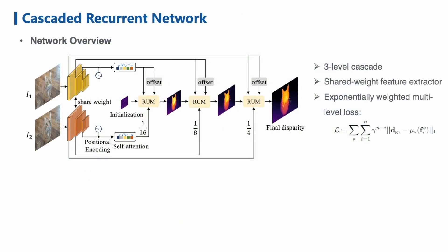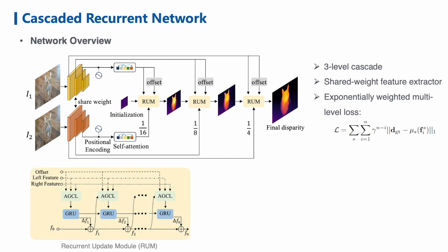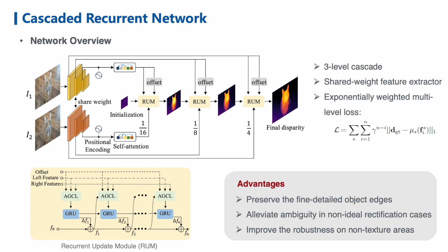This is an overview of our proposed network. A pair of images are fed into two shared weight feature extractors to produce a three-level feature pyramid, which is used to compute different scales of correlations. In each stage of the cascades, the features and the predicted disparities are refined iteratively using the recurrent update module, RUM, with an exponentially weighted multi-level loss as supervision. For each iteration in RUM, the GRU blocks update current prediction and feed it to the AGCL with learned offsets. This structure well preserves the fine detailed object edges and alleviates ambiguity in non-ideal rectification cases as well as on non-texture areas.